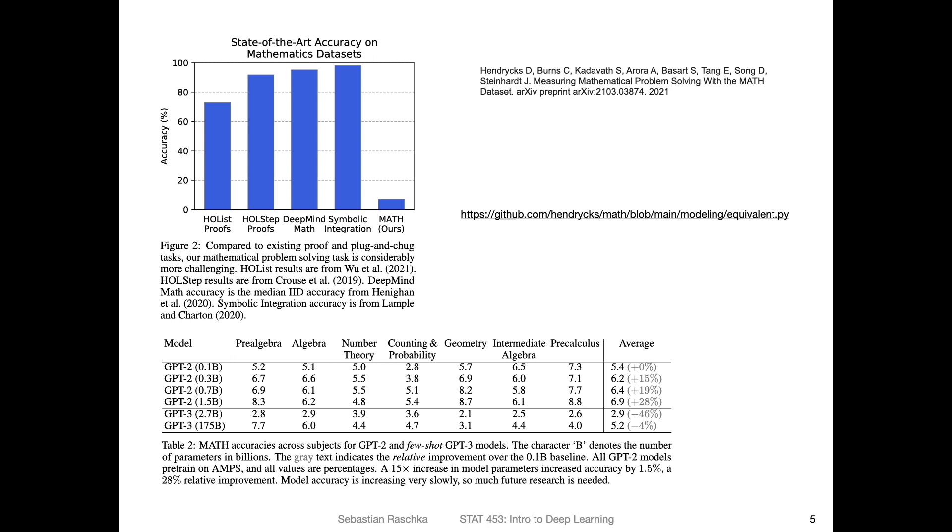So here are the results. These are results based on the previous datasets that people developed for mathematics. These were relatively simple, you can see that the models reach like 72, maybe 90, almost 100% accuracy here. However, if you now look at this new dataset, the accuracy is very low. I think it's maybe around 7% or something. So this is a way more challenging dataset.